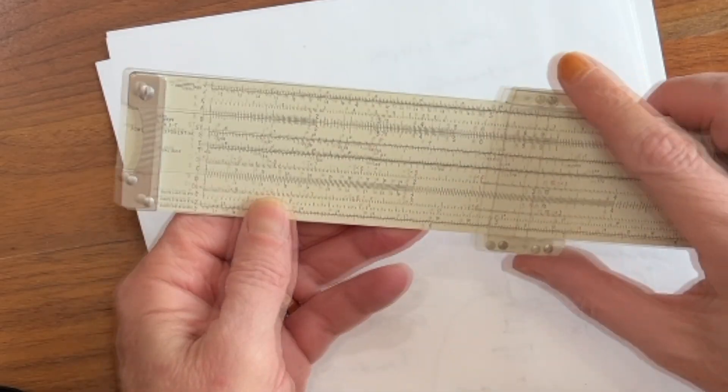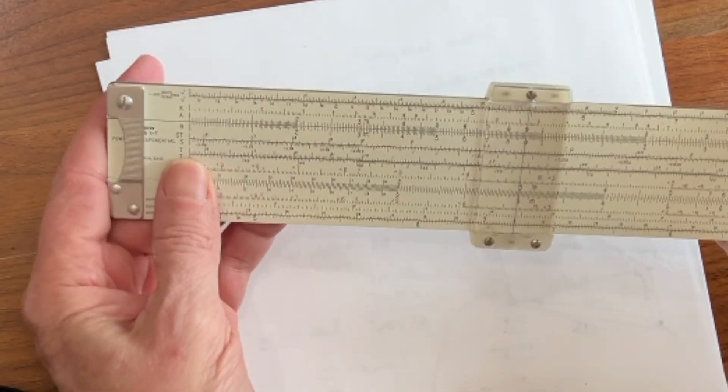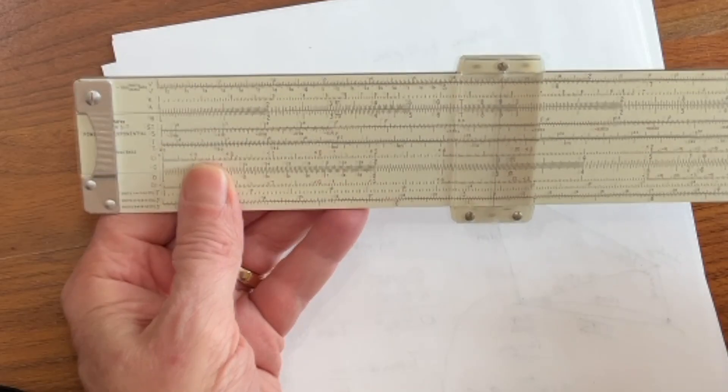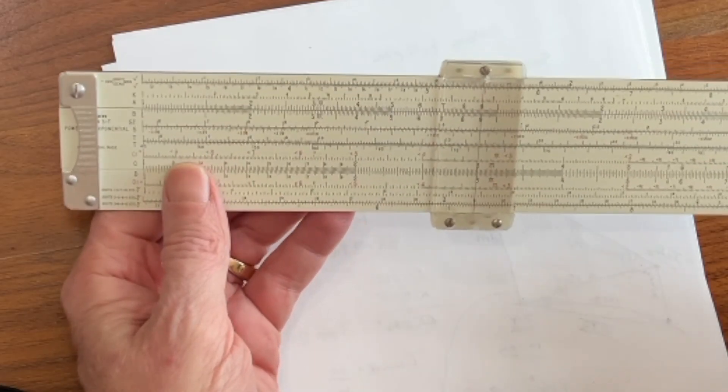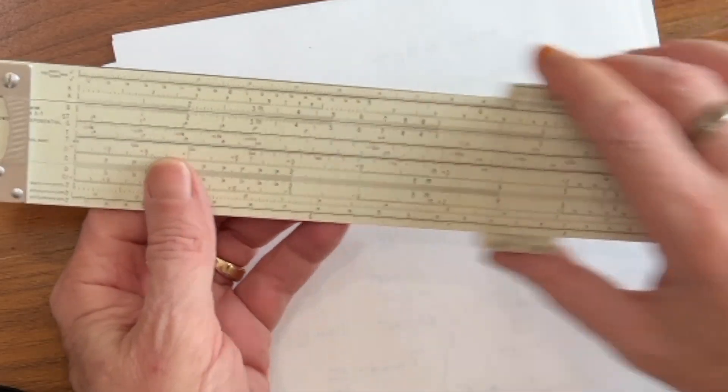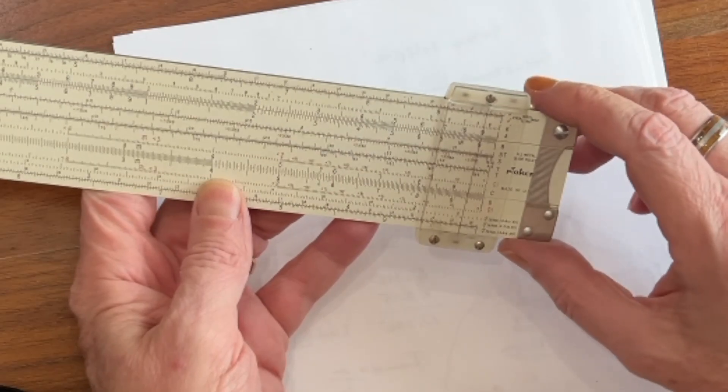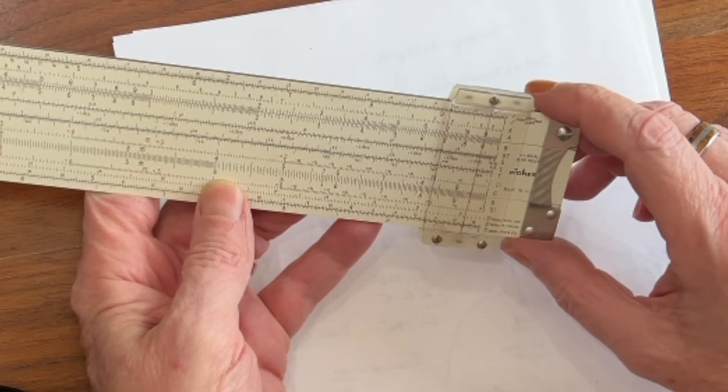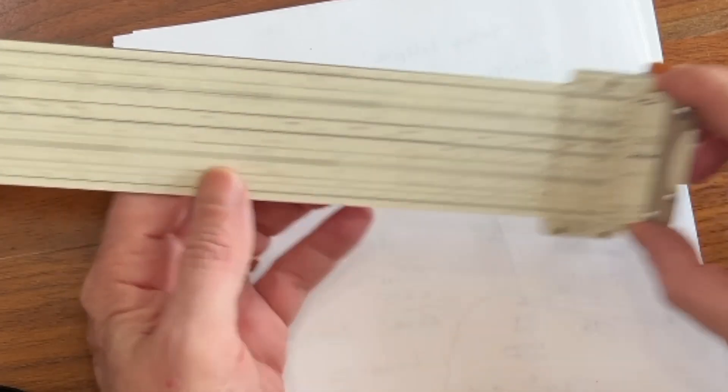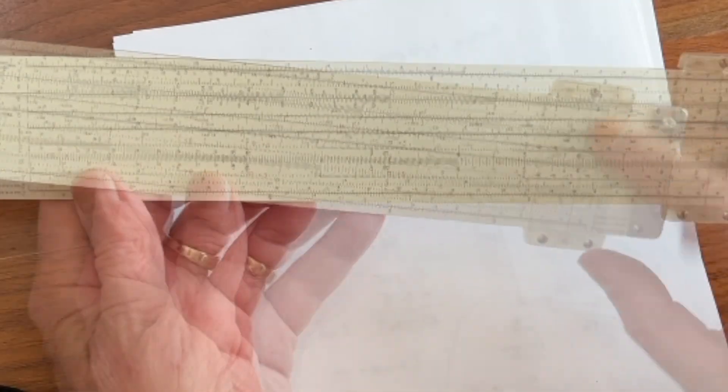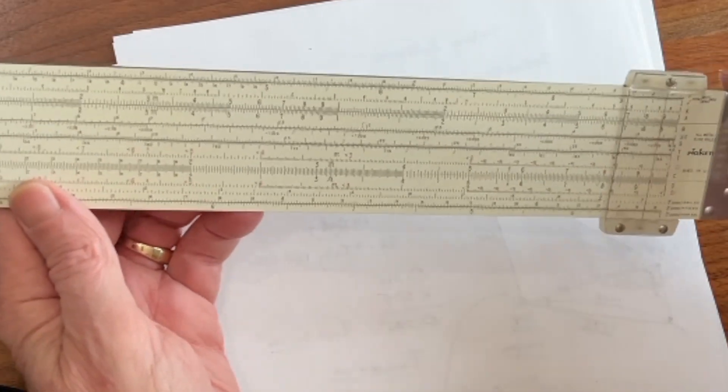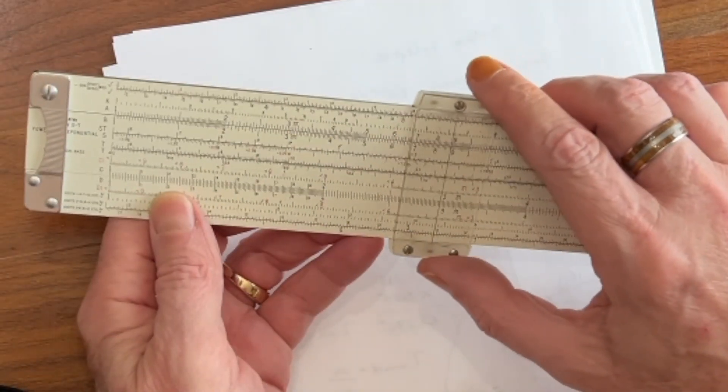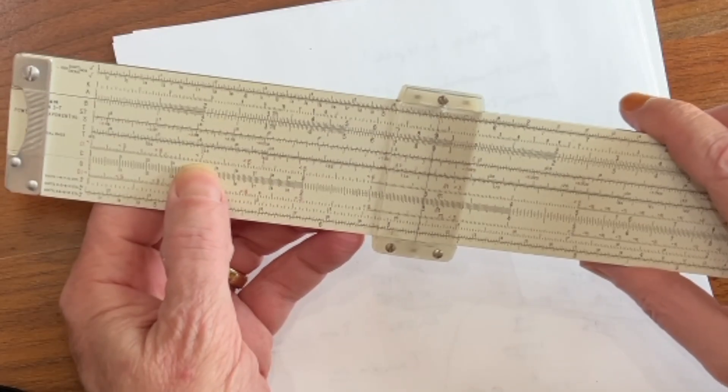You'll notice here that if we come directly under 9 on the A-B scale, we read down and we see 3. That's because 3 is the square root of 9. But if we come out here to 9, we get a different answer. We get 9.45 or so. Now, why is that? Well, that's 90. 9.45 is going to be the square root of 90, whereas that's 9, and the square root of 9 is 3.